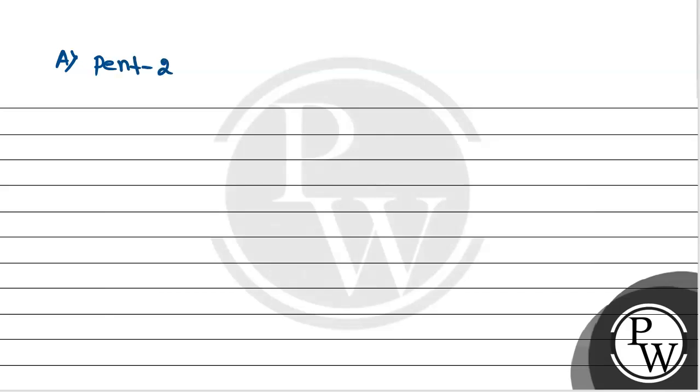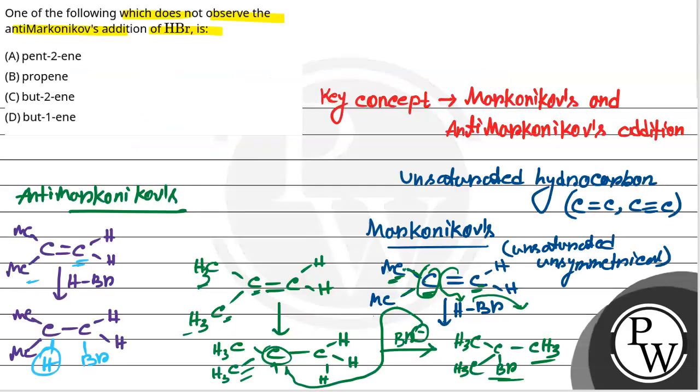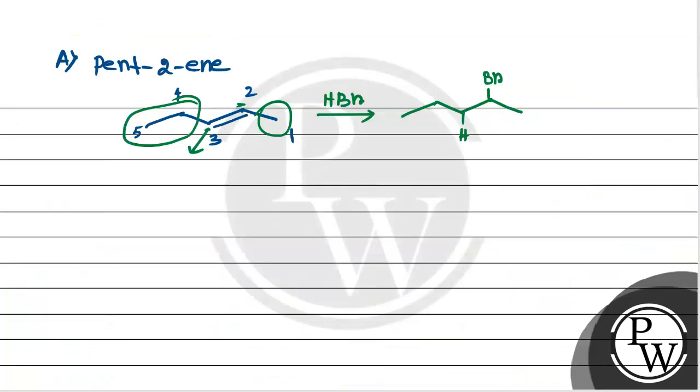First, pent-2-ene. This has five carbons: one, two, three, four, five. Double bond between two and three. This is unsymmetrical. This carbon is less substituted and that carbon is more substituted because this side has methyl group. So hydrogen goes here and bromine goes there. This is Anti-Markovnikov, so bromine goes to the less substituted carbon. So it is observed.